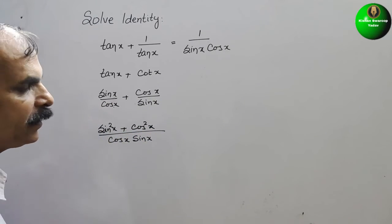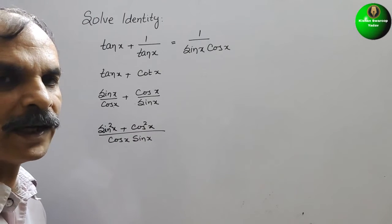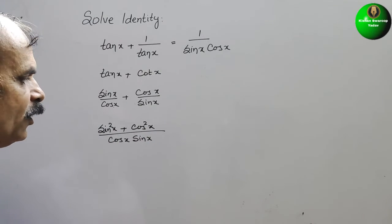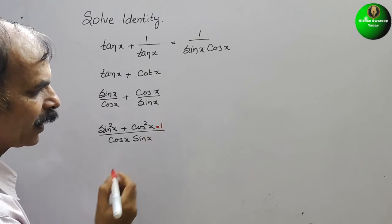So now the identity is here. Sin square x plus cos square x. So this is nothing but that is equal to 1.